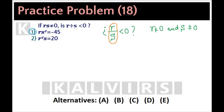From statement 1: R times S to the 4th power is a negative number. Therefore, R must be a negative number. However, we don't know anything about S — S might be either positive or negative. So statement 1 alone is not sufficient. Alternatives A and D are eliminated.